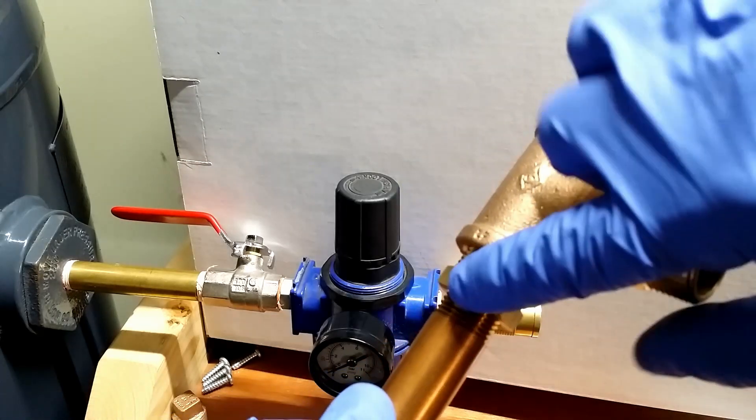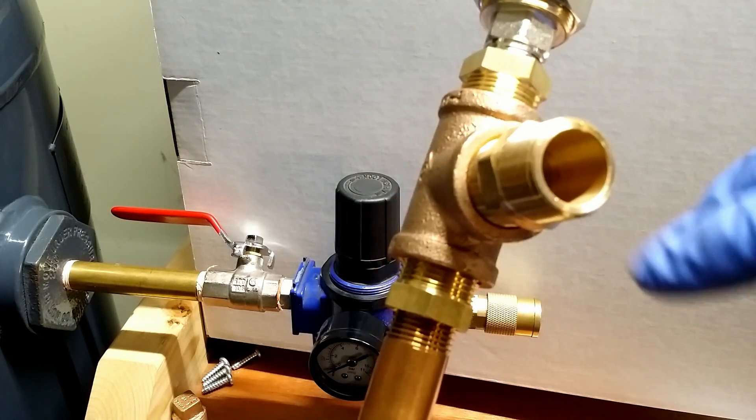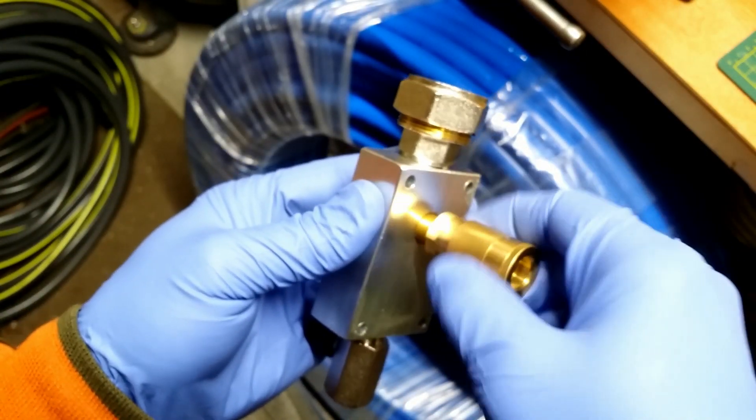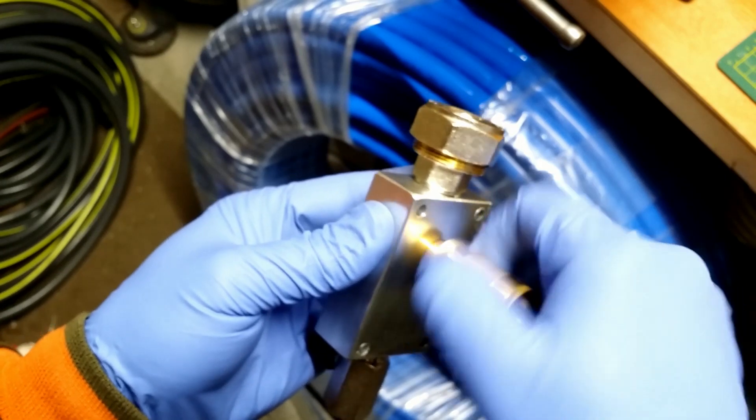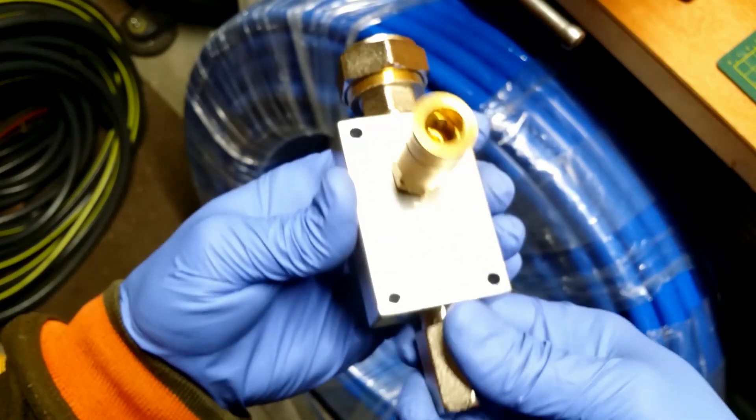Even though the system is three quarter, the thread on the coupler is half inch. As I already said, I will not use those aluminum ports because my terminals will have filters, regulators and lubricators.